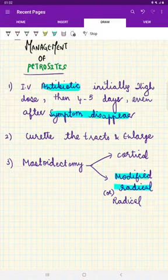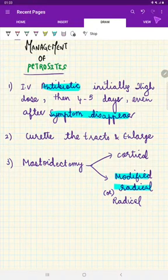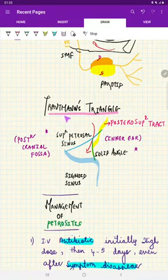The tracts—anteroinferior and posterosuperior—should be curetted and enlarged so pus can be easily drained. We can do mastoidectomy: cortical or modified radical mastoidectomy.